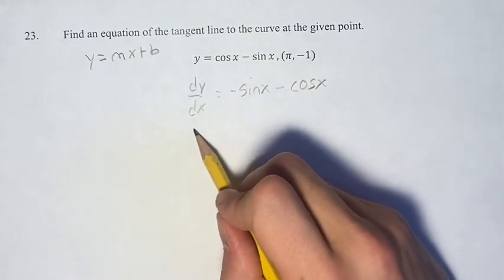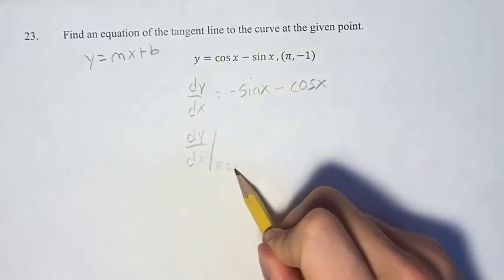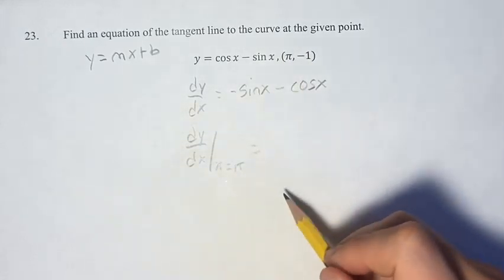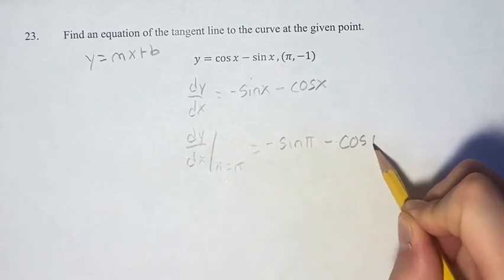We are evaluating dy/dx at x equals pi, because it's at that point. So we just plug in pi, so we have negative sine pi minus cosine pi.